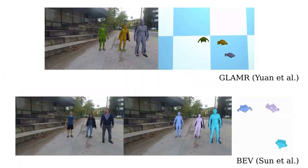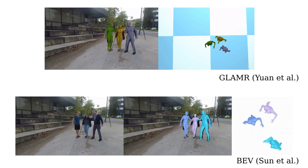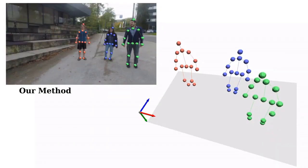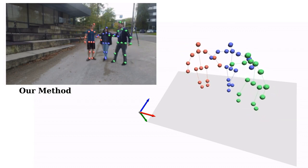We also compare our method with GLAMR, adapted to a static camera, and with BEV, adapted to sequence prediction. Comparatively, our method is capable of correctly estimating the pose, scale, and position of each human, and has very stable predictions.